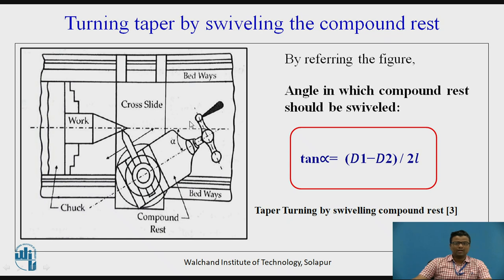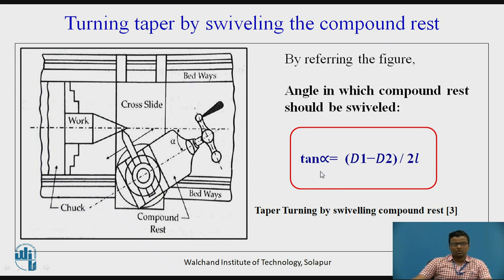By rotating the compound rest screw, you get feed in the direction parallel to the axis of rotation. The angle for the compound rest to be swivelled is given by: tan α = (d1 − d2) / 2L, so α = tan⁻¹[(d1 − d2) / 2L], where L is the length of the taper, and d1 and d2 are the major and minor diameters respectively.